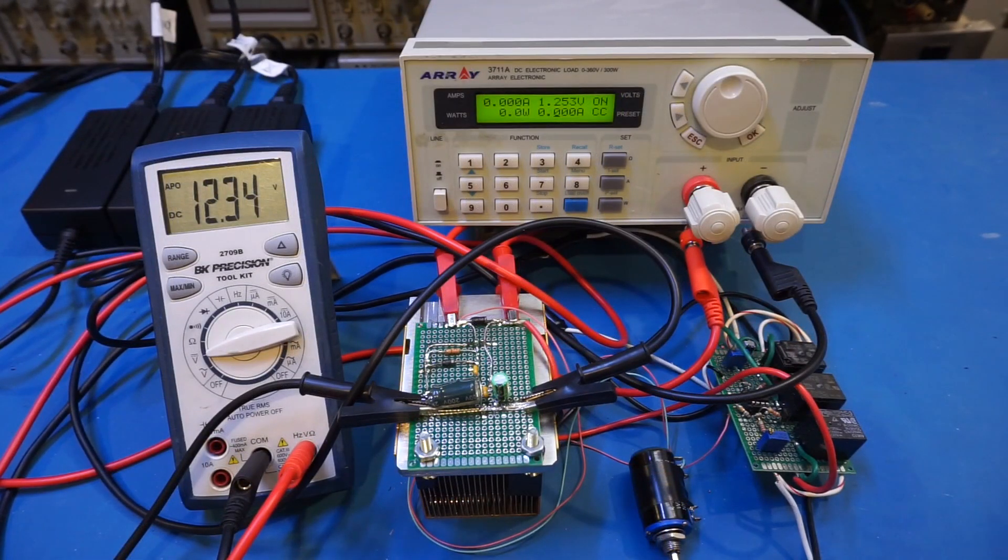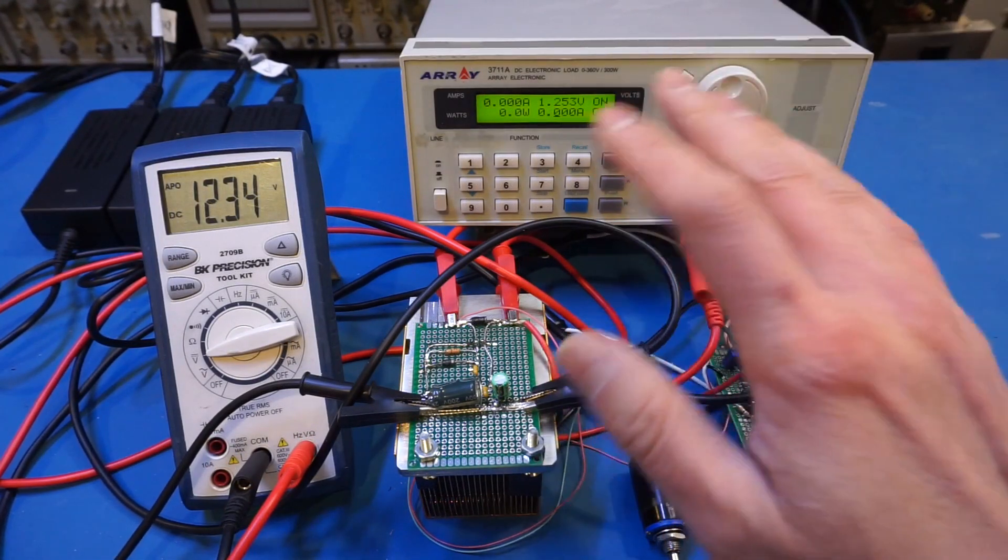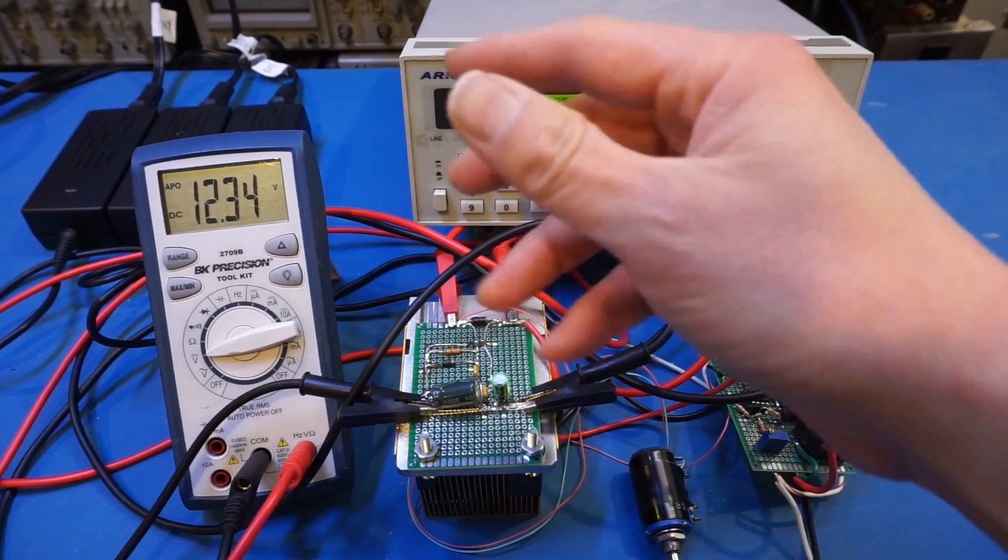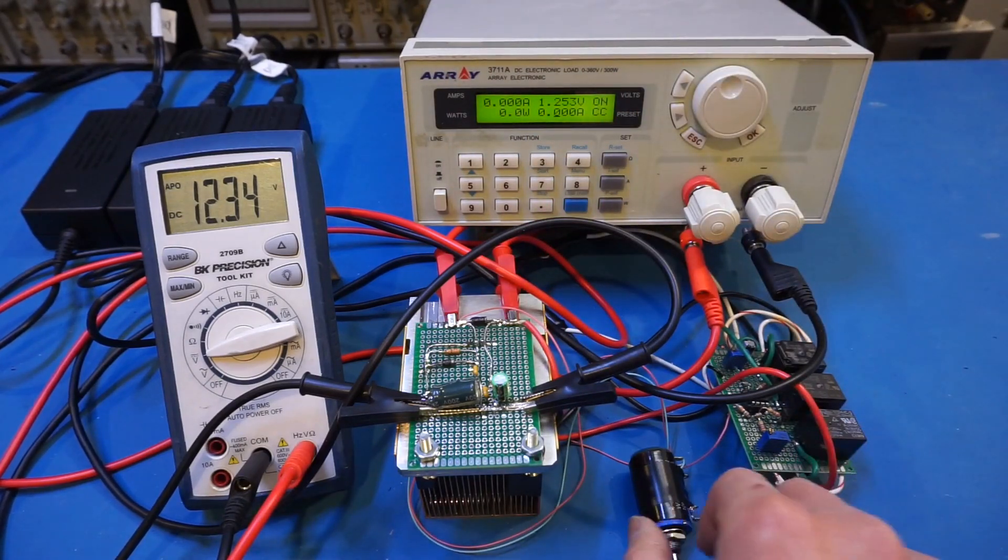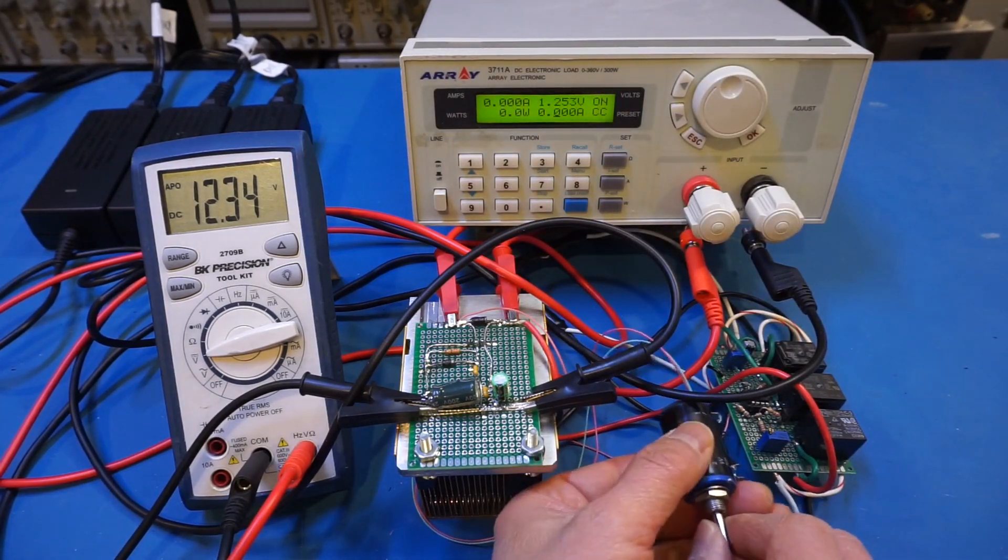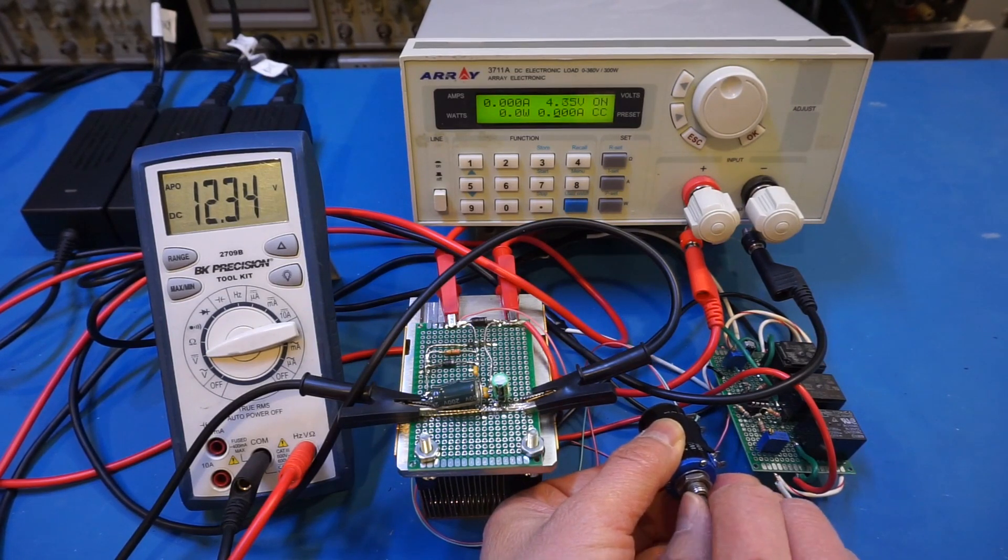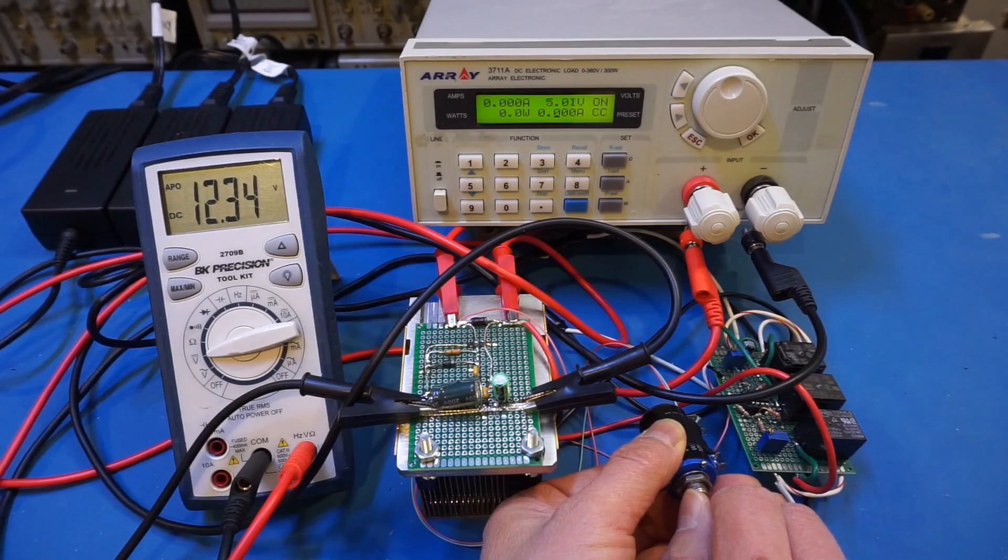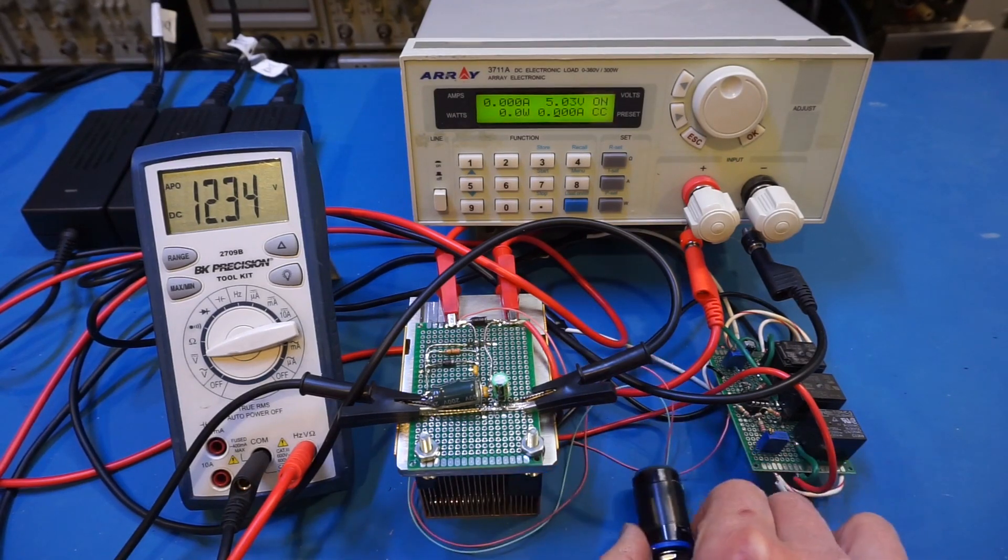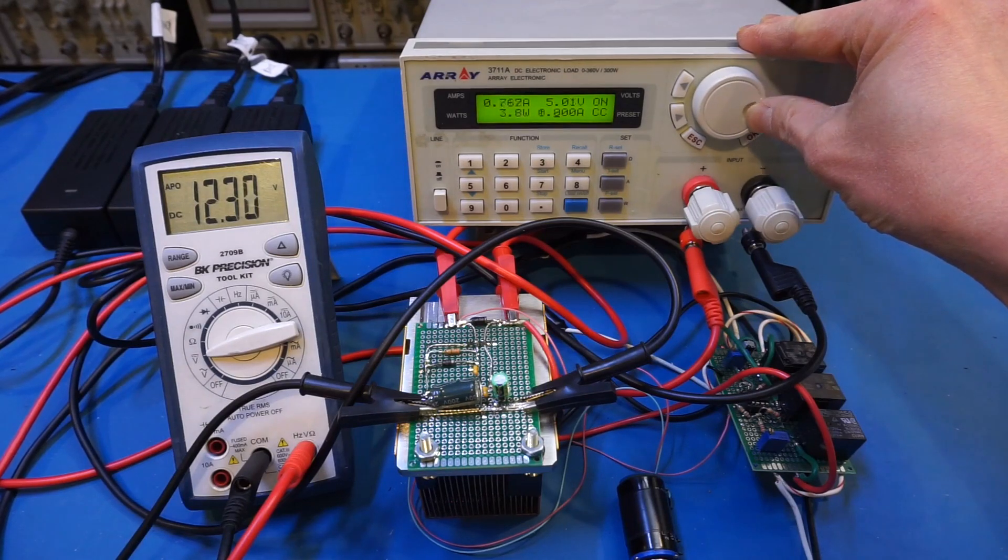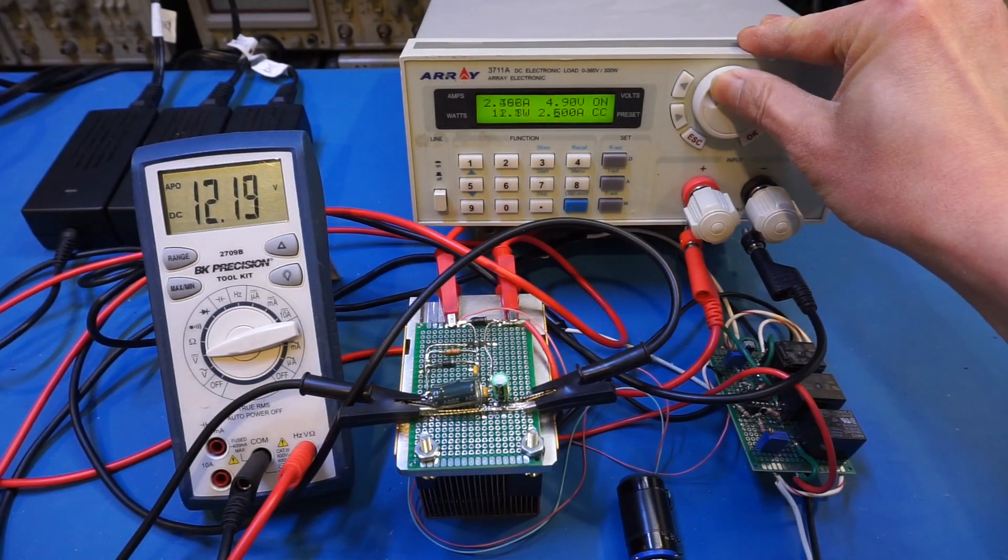And the next thing I want to show you is what's the maximum current you can draw when the output is under 10 volts. As you recall that we paralleled two of the power bricks together so we should be able to output around at least 5 amps. So let's take a look. So now let's say we set the voltage to 5 volts which is a typical voltage that you might be working on. And let's increase the output current to see if we have any issues.